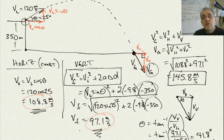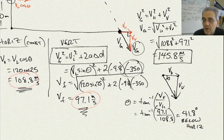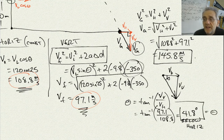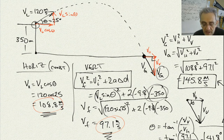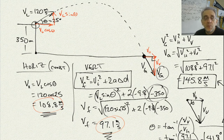Now I think we should solve for the time it takes. Now, I know what you're thinking — this is going to be a quadratic formula, and you're right. But there is another way to solve the time in the air without using a quadratic, if we turn this problem into two problems.